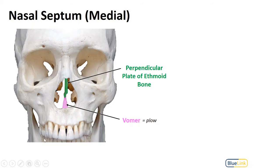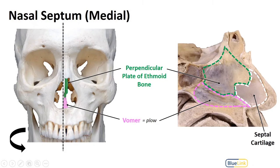Before we get into that, I want to talk a little bit about the septum. The superior portion of the septum is formed by the ethmoid bone, specifically the perpendicular plate, and the inferior portion by the vomer. If we look at this from another view we can see the perpendicular plate of the ethmoid bone and how it actually extends superiorly as the crista galli.